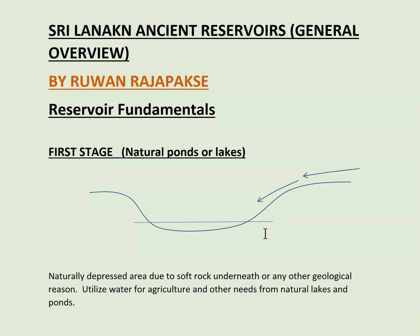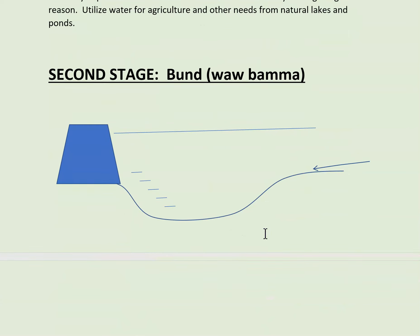The idea was this: somebody — we don't know who — in Sri Lanka, or probably in other countries too, thought: what would happen if we build an embankment? You would get more water storage. It's a simple idea, and it worked. Later, this little idea was expanded into building very complex structures and systems.